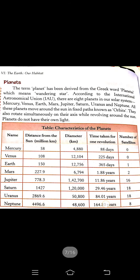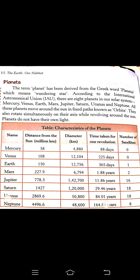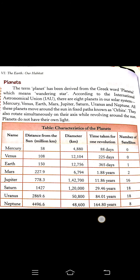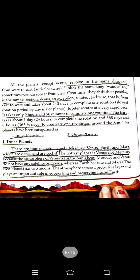In today's class, we are going to start the topic of planets. We have already discussed that the word 'planet' is a Greek word whose name is 'Wanderer,' meaning one that moves around. All the planets revolve around the Sun, that is why we call them planets. There are eight planets. We have already discussed natural satellites. Now we are going to discuss inner and outer planets. Earth is very special because it takes 365 days and 6 hours to complete one revolution around the Sun.